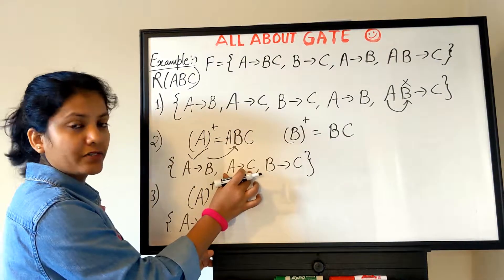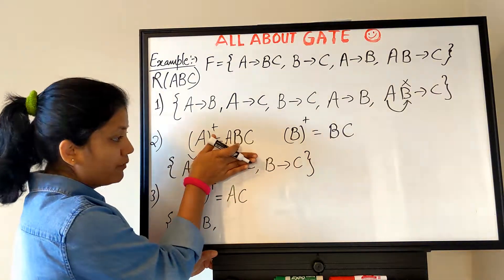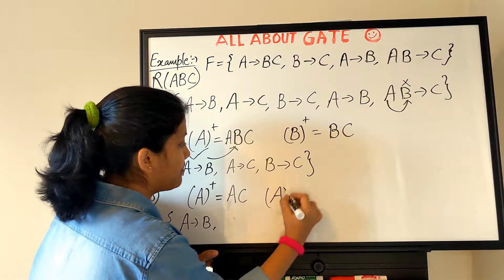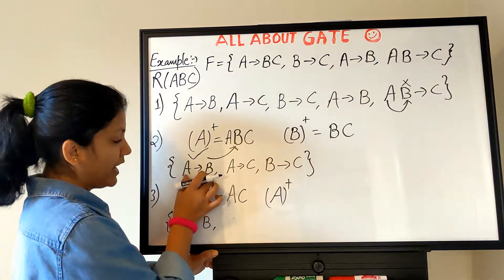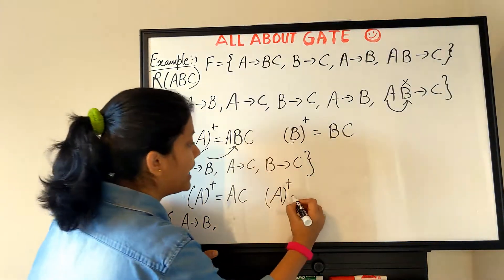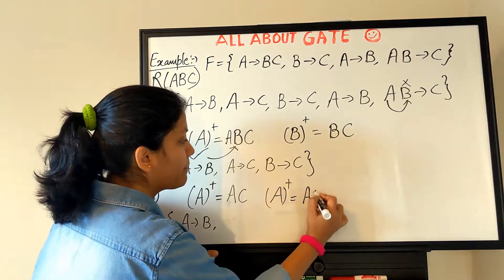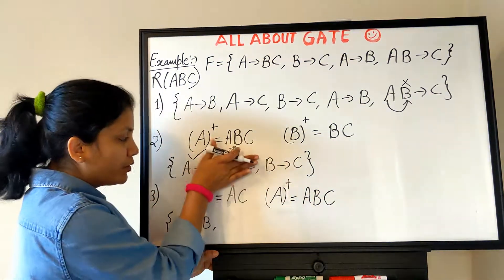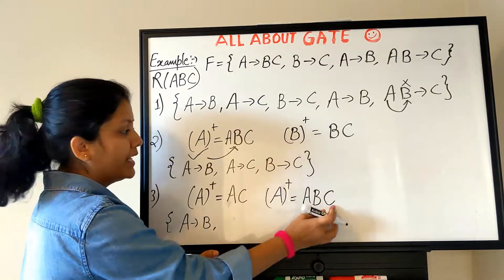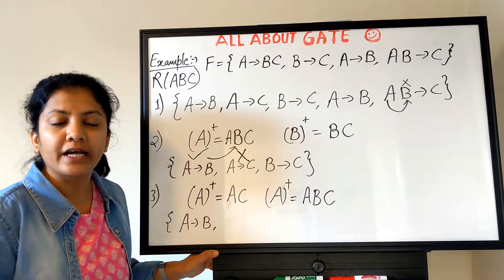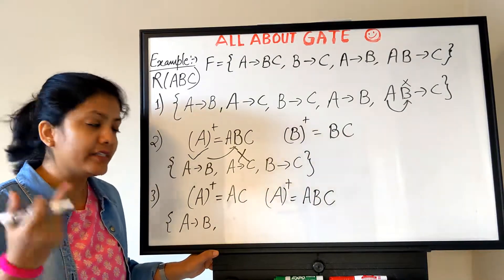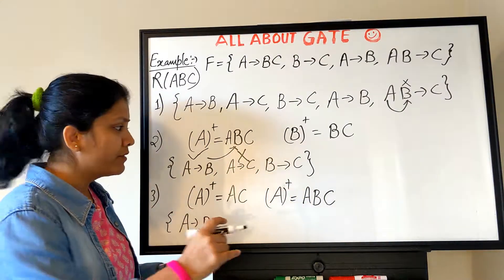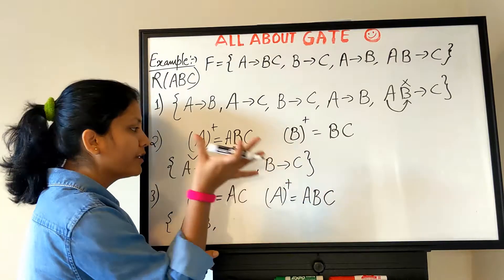Now let's check the second functional dependency A→C. Assume it is not present, and try to imply A→C. We find A⁺ using A→B and B→C: A determines B via A→B, then B determines C via B→C. So A, B, C — we can still imply A→C. That means A→C is redundant and not essential; we can remove it from the final set. Once an FD is found redundant, it is immediately removed.